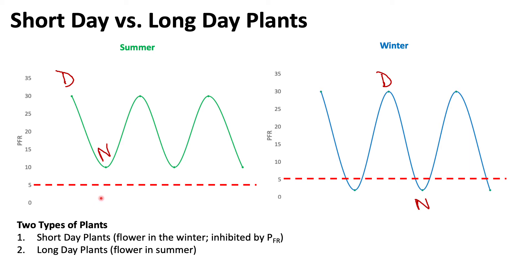Since Pfr is not dropping back below the threshold, short day plants, which are inhibited by an accumulation of Pfr, will not produce flowers. In summer, because the nights are very short, there is a buildup of Pfr that is not being converted back into phytochrome red, and that accumulation is what inhibits flowering in short day plants.